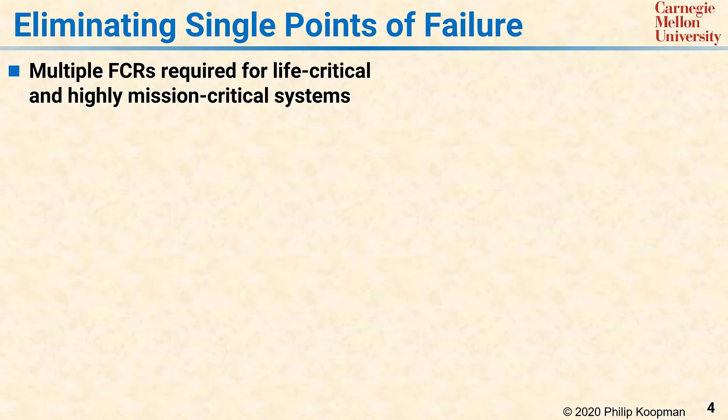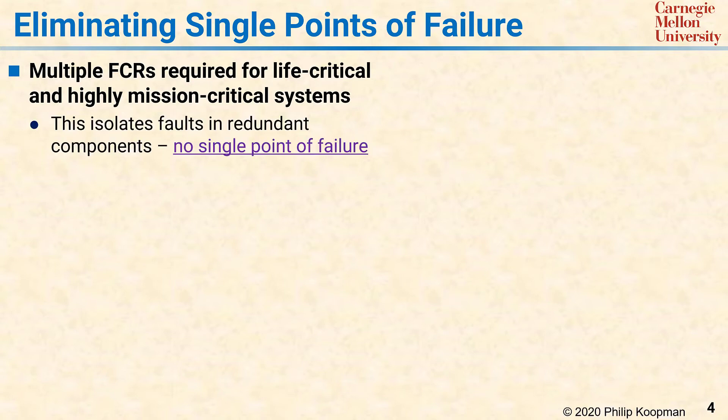Generally, this corresponds to the level of reliability expected of systems that could cause death of a person or catastrophic results to a business. If you are building such a system, you need to make sure that not only do you have redundancy to survive such failures, but also that the redundancy has no single points of failure.